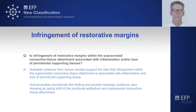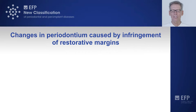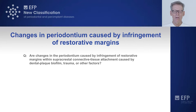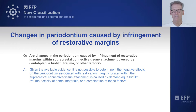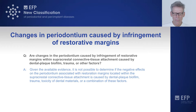Regarding changes in the periodontium caused by infringement of restorative margins — if they happen, are they caused by dental plaque biofilm, trauma, or other factors? Given the available evidence, it is not possible to determine if those negative effects on the periodontium associated with restorative margins located within the supracrestal connective tissue attachment are caused by dental plaque biofilm, trauma, toxicity of dental materials, or a combination of all these factors. We simply do not have that information.